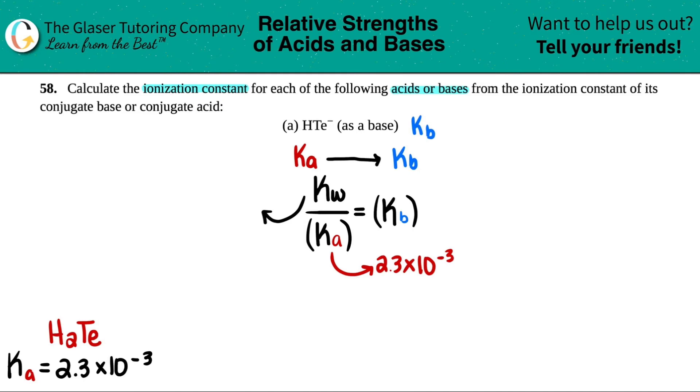Kw, which is the ionization for water, is 1.0 times 10 to the negative 14th.